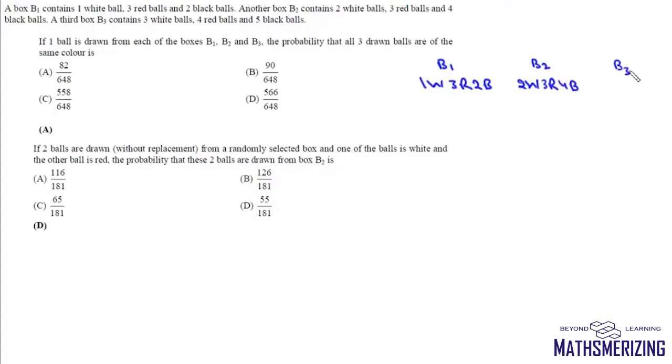And another box B3 contains 3 white, 4 red and 5 black balls. Now if one ball is drawn from each of the boxes B1, B2 and B3, find the probability that all drawn balls are of same color.